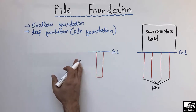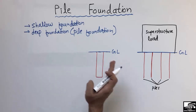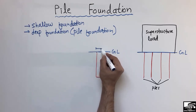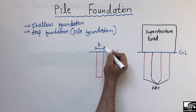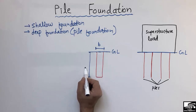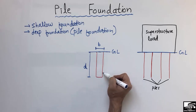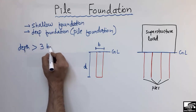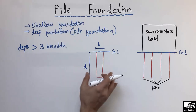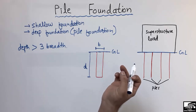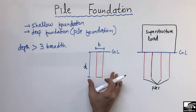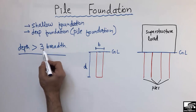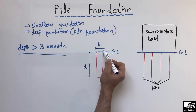Now, how do we categorize whether a foundation is a deep foundation, a shallow foundation, or a pile foundation? To differentiate, let's consider that B is the width or breadth of the pile, and D is the depth of the pile constructed below the ground level. If the depth D is greater than three times the breadth B, then we call it a pile foundation. You cannot call it a shallow or isolated column foundation — it must be called a pile foundation when D is greater than 3B.